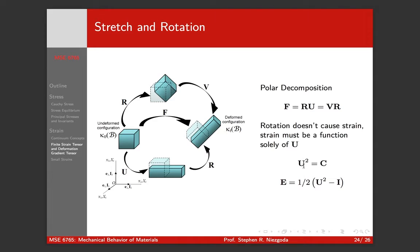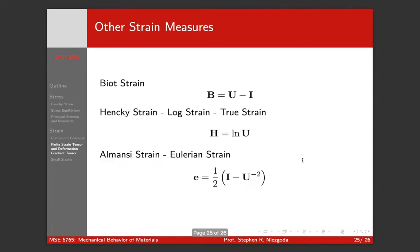But more importantly, since the rotation part doesn't cause strain, any definition that we create for a strain tensor has to be a function solely of U. Specifically, we can get a little more formal—any strain tensor has to be a function of the eigenvalues and eigenvectors of U, but that's a little over. But we can use this to define other strains.